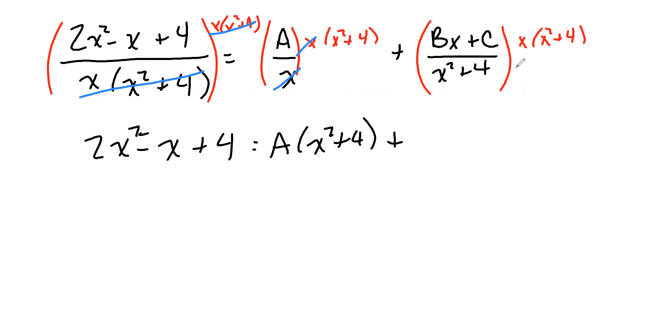And that leaves an A times (x² + 4). And on the second fraction, the x² + 4 is canceled. That's going to leave us (bx + c) times x.